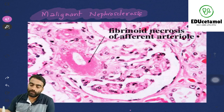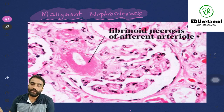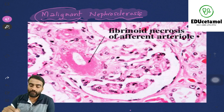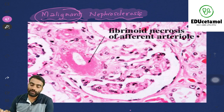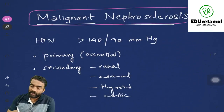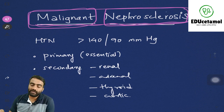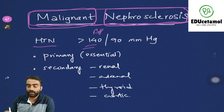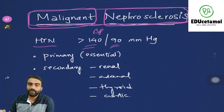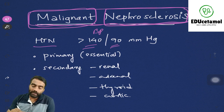In this class we are going to study about malignant nephrosclerosis — what happens in the kidney, what are the pathological changes which take place in the kidney in the malignant phase of hypertension. I will explain the diagram in the end. Before that, let us understand what is hypertension: when the blood pressure rises beyond 140 systolic or 90 diastolic, not at one point in time but on multiple readings.